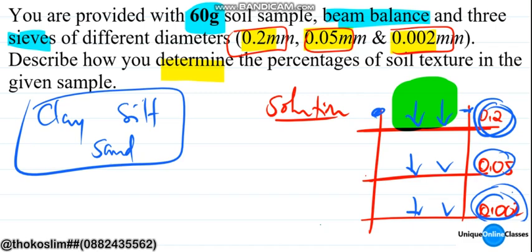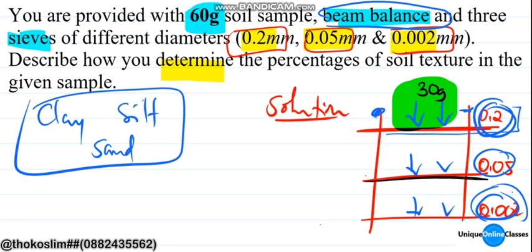These are the particles that are going to be collected and weighed using the beam balance. The sand collected is 30 grams, the silt is 20 grams, and the clay is 10 grams. If you add these three — 30 plus 20 plus 10 — that gives you 60 grams total.